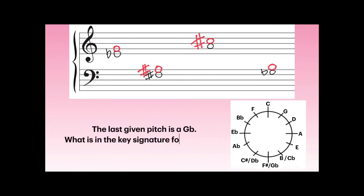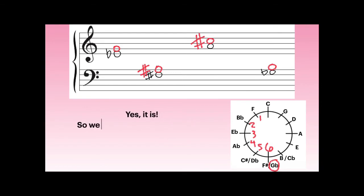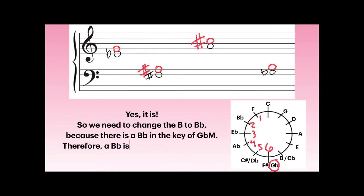The last given pitch is a G-flat, and we know it goes up to some kind of B. What is in the key signature for G-flat major? We find G-flat at the bottom of our circle of fifths — it has six flats: B, E, A, D, G, and C. Is B on that list? It absolutely is — in fact, it's the very first flat in our order of flats. So we need to change the B to B-flat because there is a B-flat in the key of G-flat major. Therefore, a B-flat is a major third above G-flat.